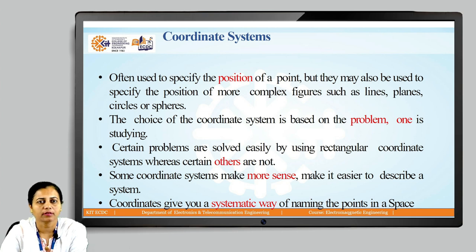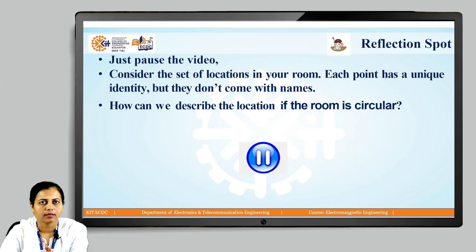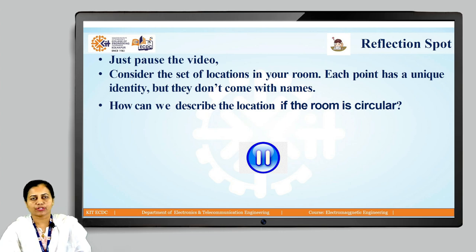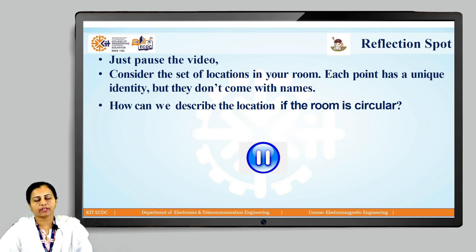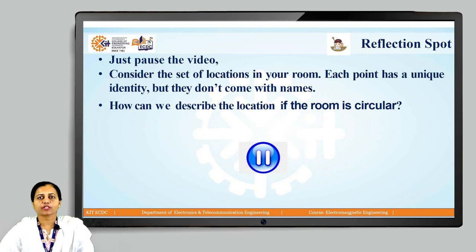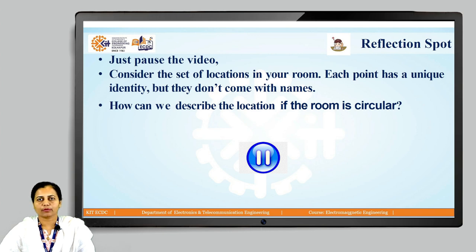Coordinate systems are used to give a way to systematically represent a point in space. Now here I have a question for all of you — just pause the video and try to write the answer. Consider the set of locations in your room; each point has a unique identity but they do not come with names. How can we describe the location if the room is circular?